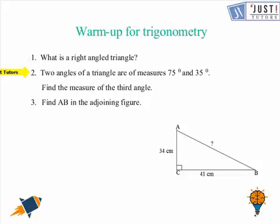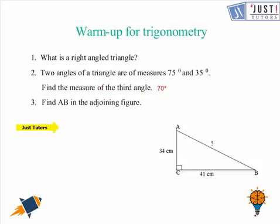Let us go to question number 2. That says 2 angles of a triangle are of measure 75 degrees and 35 degrees. Find the measure of the third angle. So we need to use the angle sum property here, and with that we can work out that the third angle is of 70 degrees.